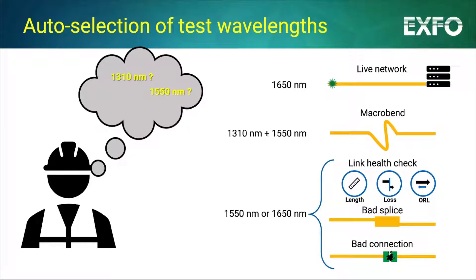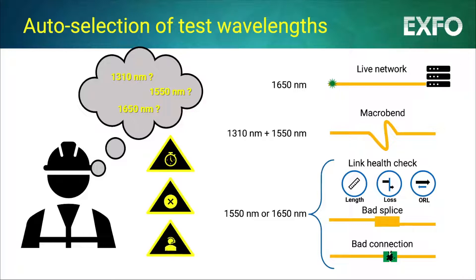Deciding which test wavelength is appropriate might be difficult for a beginner, resulting in a bad decision that can waste time, leave faults behind, or eventually generate the need for remote support. Also, manual wavelength selection can be far from optimal for advanced users, leading to dual wavelength testing by default, which systematically doubles the testing time.